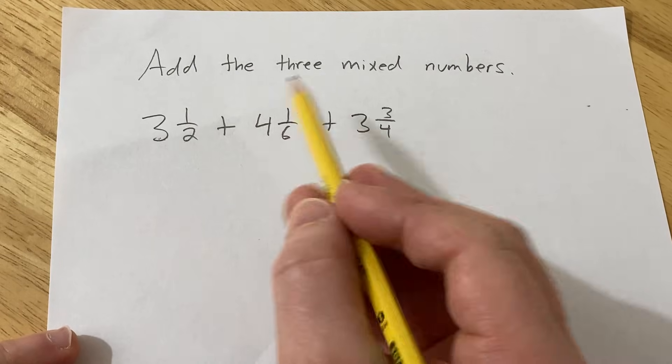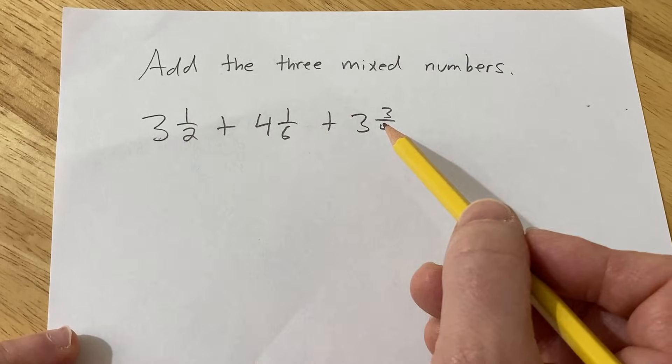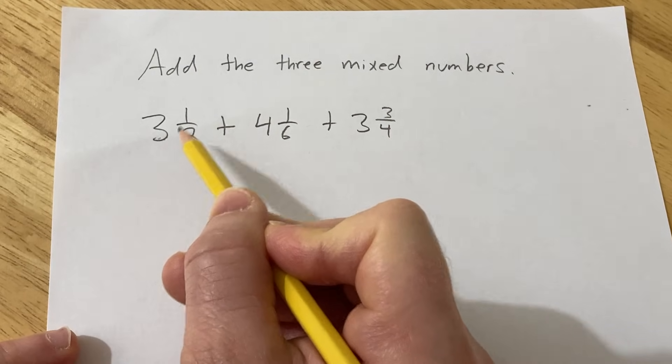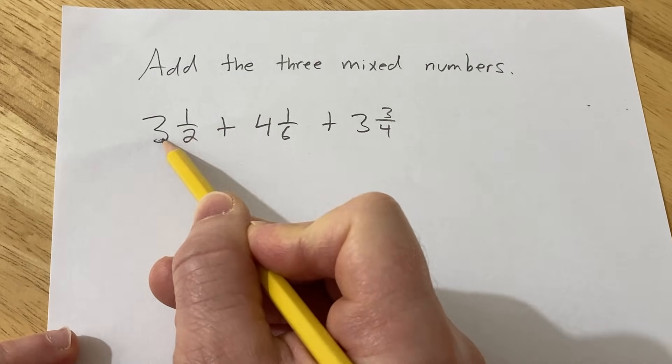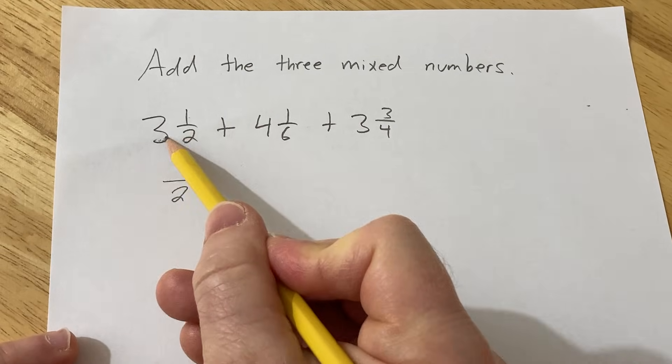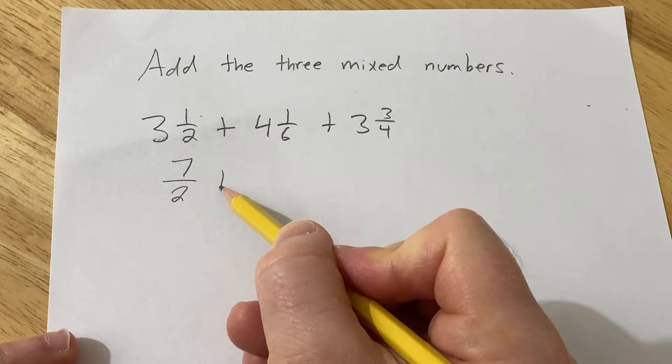So one way to do this problem is to first convert these into numbers that are not mixed numbers, so just fractions. So to do that we're going to do it as follows. 2 times 3 is 6, 6 plus 1 is 7, so this becomes 7 over 2. Again, 2 times 3 is 6, 6 plus 1 is 7, so this becomes 7 over 2 plus.